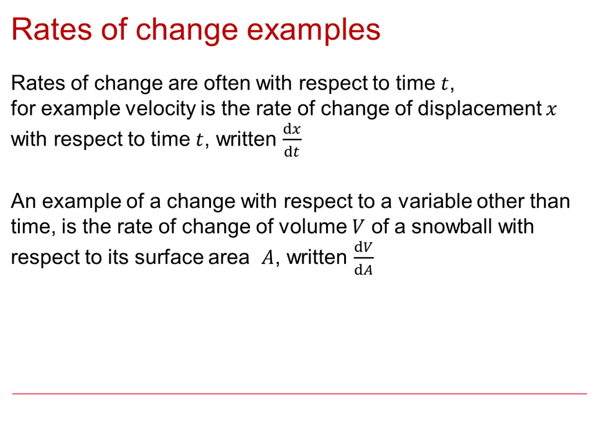So an example of a rate of change with respect to a variable other than time is the rate of change of volume v of a snowball with respect to its surface area a. We would write this as dv by dA. We should note that the dependent variables are x and v, and the independent variables are t and a.